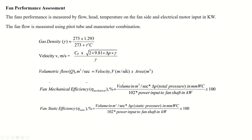Fan performance can be measured by flow, head, and temperature measurement on the fan side, and electrical motor input measurement on the motor side. Fan flow is measured using a Pitot tube and manometer combination. The formula for air density calculation is given in equation number one, and the velocity of air in a duct or pipe can be measured using the second formula.